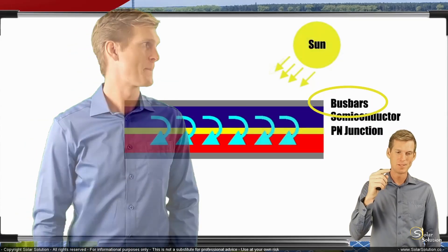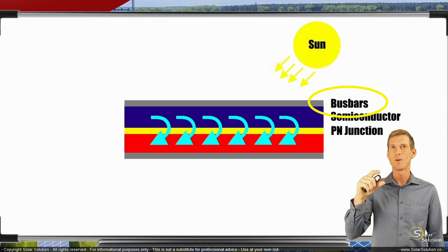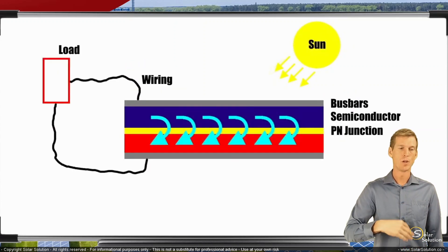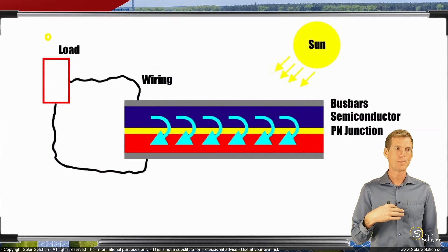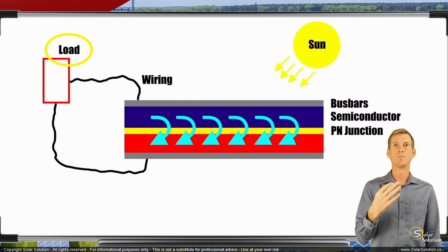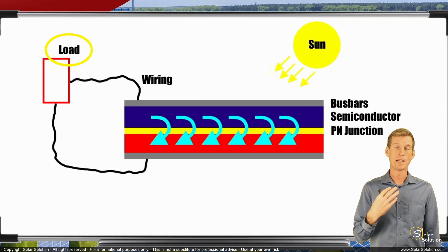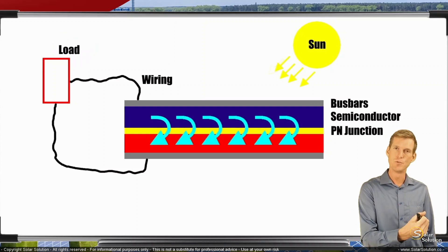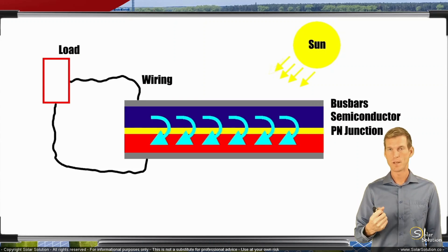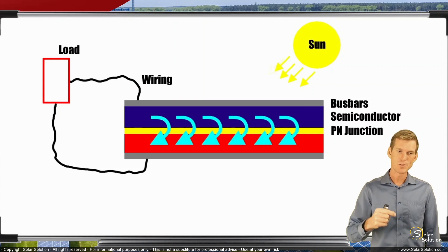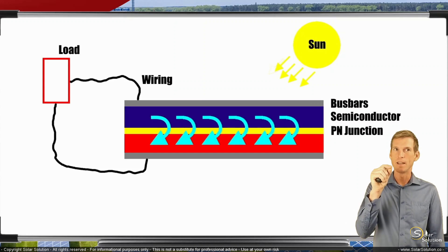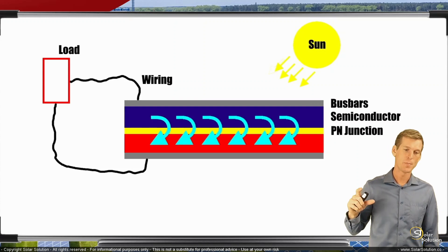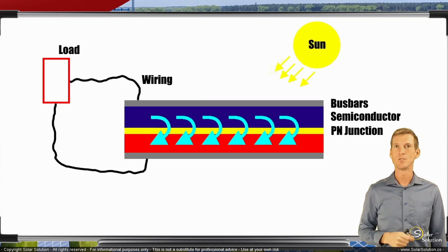To these two different bus bars, we connect wires and lead them to our load. The load is the technical term for anything that consumes the electricity—it can be a light bulb, a motor, or a battery. Anything that consumes power from your solar panel is called your load. In this way, you're using the electricity produced by electrons jumping from one side to the other, taking this power through the bus bars and leading it to your load.